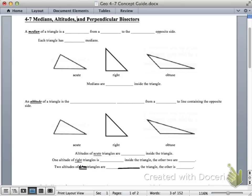A median of a triangle is a segment from a vertex to the midpoint of the opposite side. Each triangle has three medians.